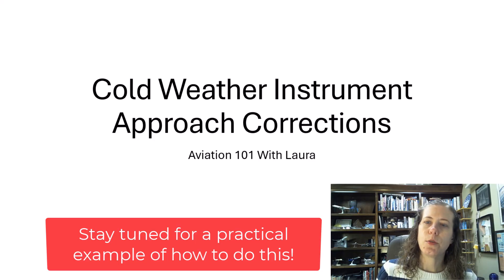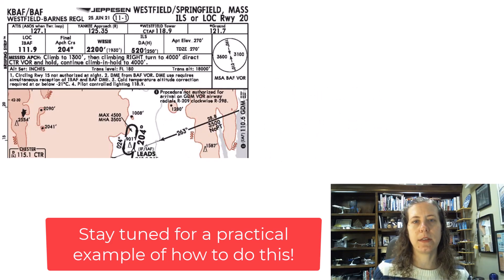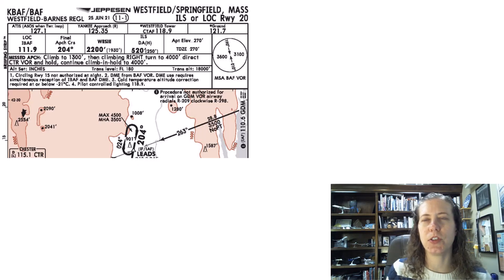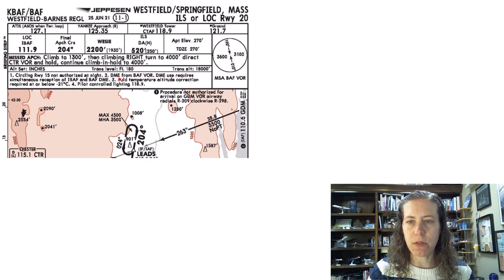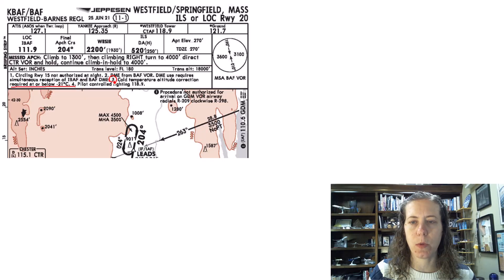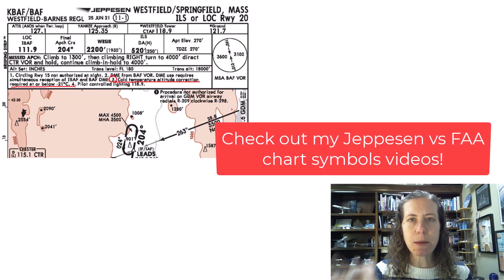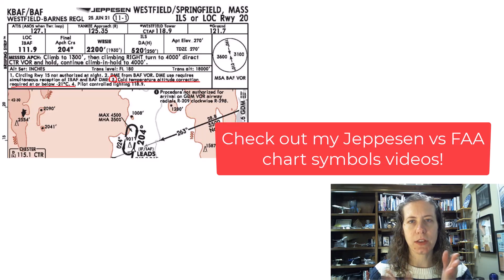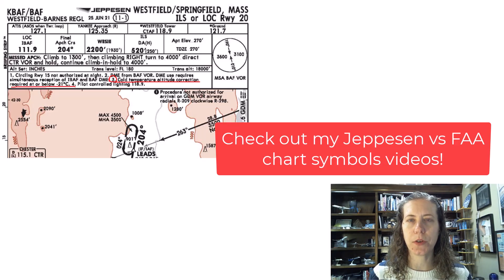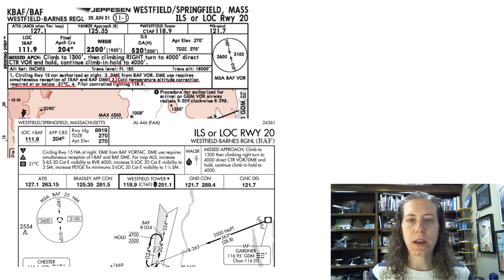Since we can't correct the altimeter for non-standard temperature, when it's very cold we need to apply what's called the cold weather correction. Here's an example using Westfield, Springfield, Massachusetts. On a Jeppesen chart, you can see a note in the briefing strip: cold temperature altitude correction required at or below negative 21 degrees Celsius. If you see this note on a Jeppesen chart, that means you need to apply the cold weather corrections when they apply — in this case, below negative 21°C.